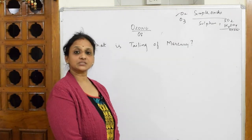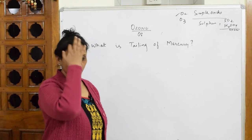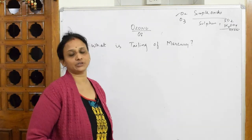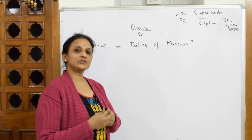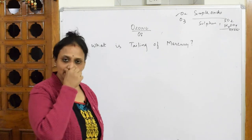Now let's come back. After estimation of ozone, let us learn one more question: What is tailing of mercury? Whenever we speak about mercury, we know it is a semi-solid.